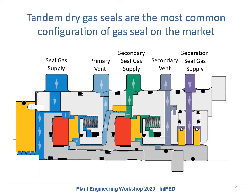The first leakage point of the seal is the primary vent. This is where the seal gas leakage goes. It is usually connected to a flare system and can have a minor back pressure on it.